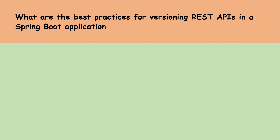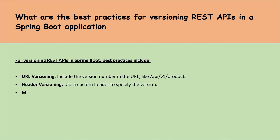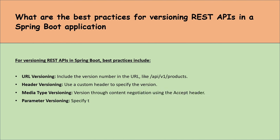What are the best practices for versioning REST APIs in a Spring Boot application? Best practices include: first, URL versioning — include the version number in the URL, like api/v1/products. Second, header versioning — use a custom header to specify the version. Third, media type versioning — version through content negotiation using the Accept header. Fourth, parameter versioning — specify the version as a request parameter.